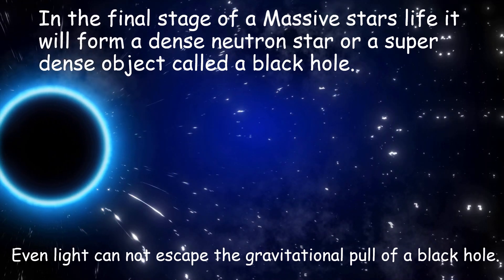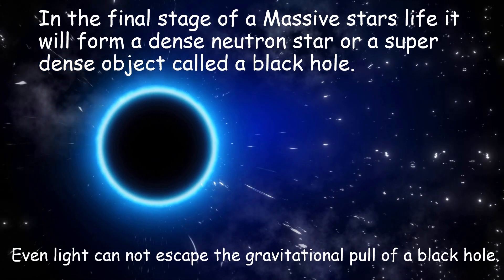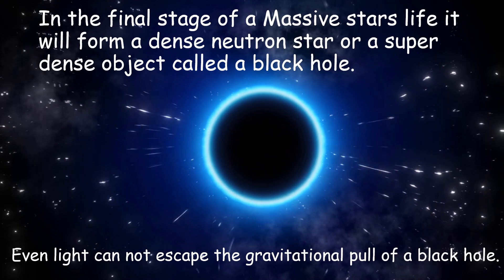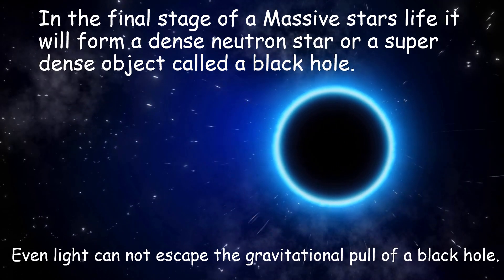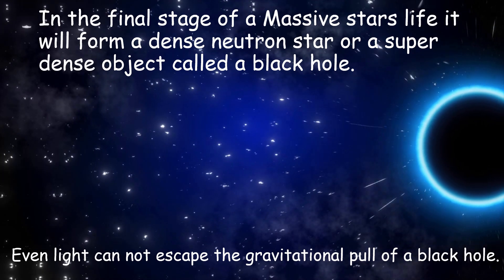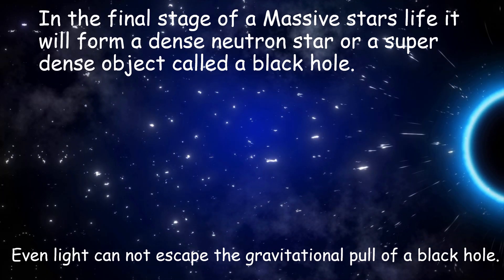A black hole has such a strong gravitational pull that even light cannot escape. A neutron star is not quite as dense, but it is still dense enough that the gravitational pull will pull the electrons from the orbitals of its atoms into its nuclei and fuse with the protons, forming neutrons. A neutron star is purely made of neutrons.